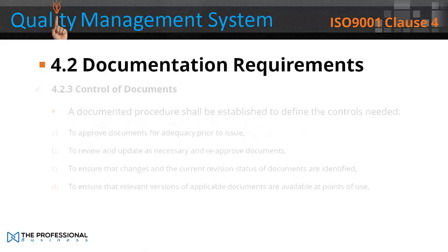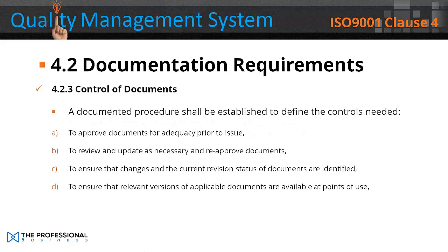4.2.3 Control of Documents — a documented procedure shall be established to define the controls needed: a) To approve documents for adequacy prior to issue; b) To review and update as necessary and re-approve documents; c) To ensure that changes and the current revision status of documents are identified; d) To ensure that relevant versions of applicable documents are available at any point of use.